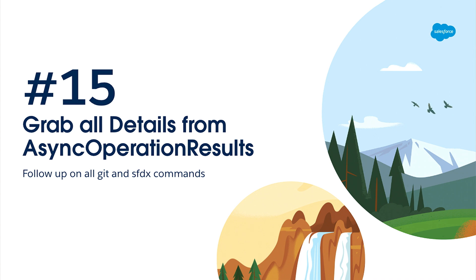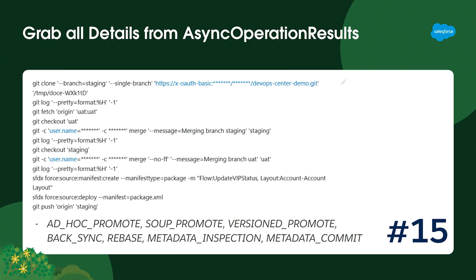We promised you a demo repository — you'll find the link in our resources. But before that, let's go deep into the heart of DevOps Center and look at a certain kind of record: the async operation result. As you remember, Heroku is executing commands on our behalf, and the async operation result will tell you exactly which commands have been issued. If something fails, you can look at the async operation result and, if you're knowledgeable in Git and SF commands, find out what Heroku is trying to do and why it doesn't work. DevOps Center currently knows about seven different async operations — my favorite is the 'soup promote.'